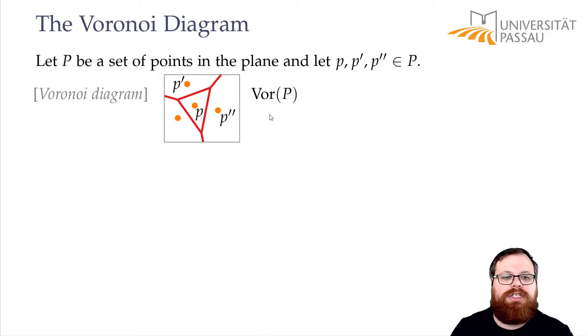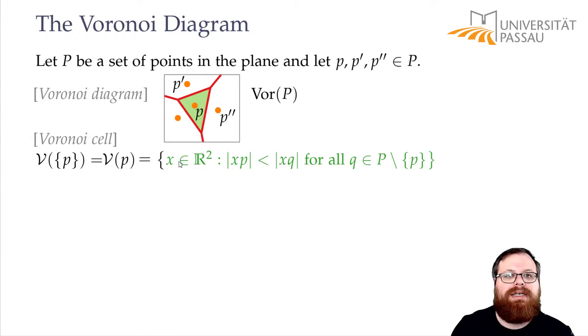A Voronoi region, that is the region closest to point P, is defined by just a single point. This is also called a Voronoi cell. The Voronoi cell of a single point P is defined as the set of all points in the plane where the distance to P is smaller than the distance to all other points of this set.